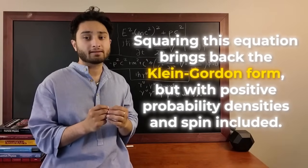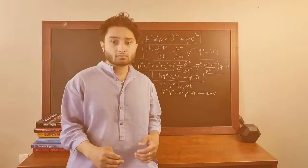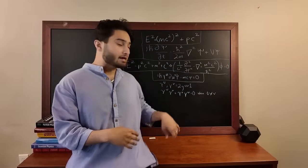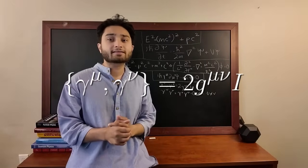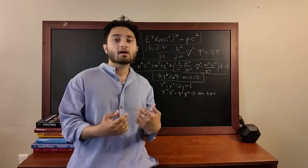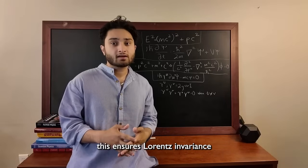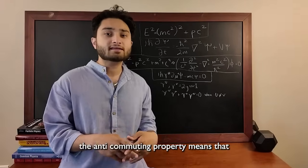Now, the reason this works is because gamma matrices are basically 4x4 matrices that satisfy the anti-commutation relation. This ensures Lorentz invariance, and the anti-commuting property means that gamma mu,